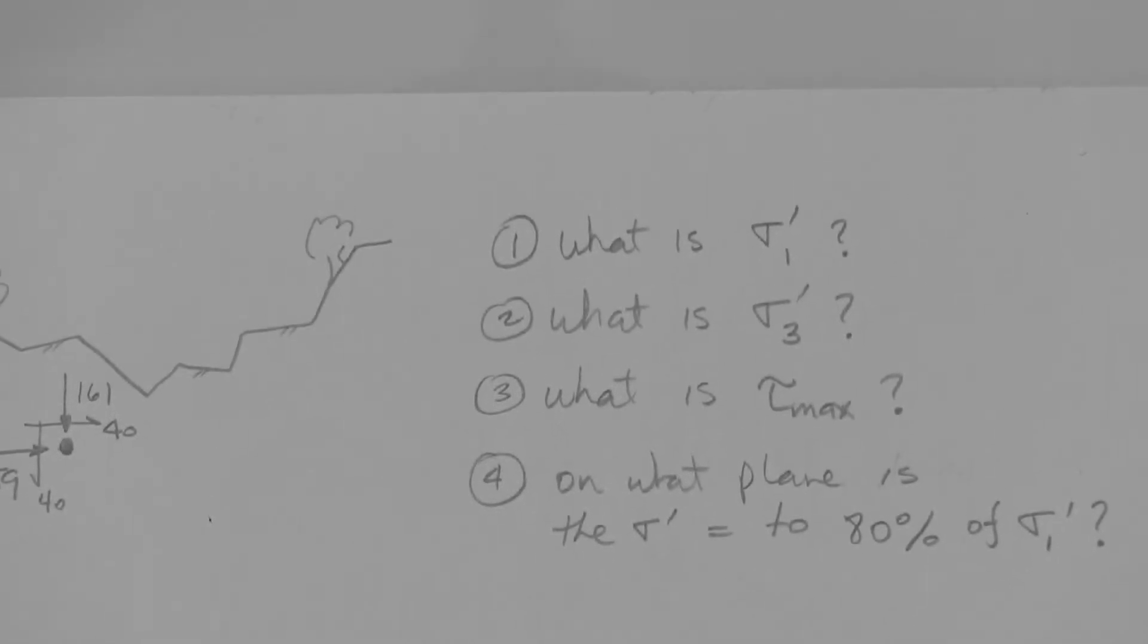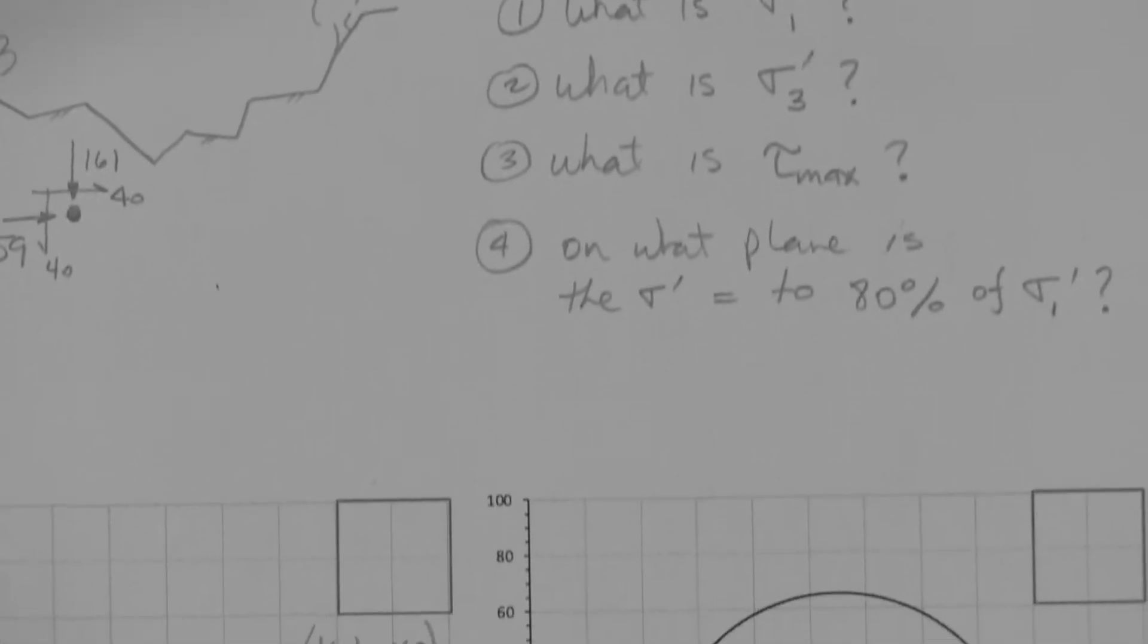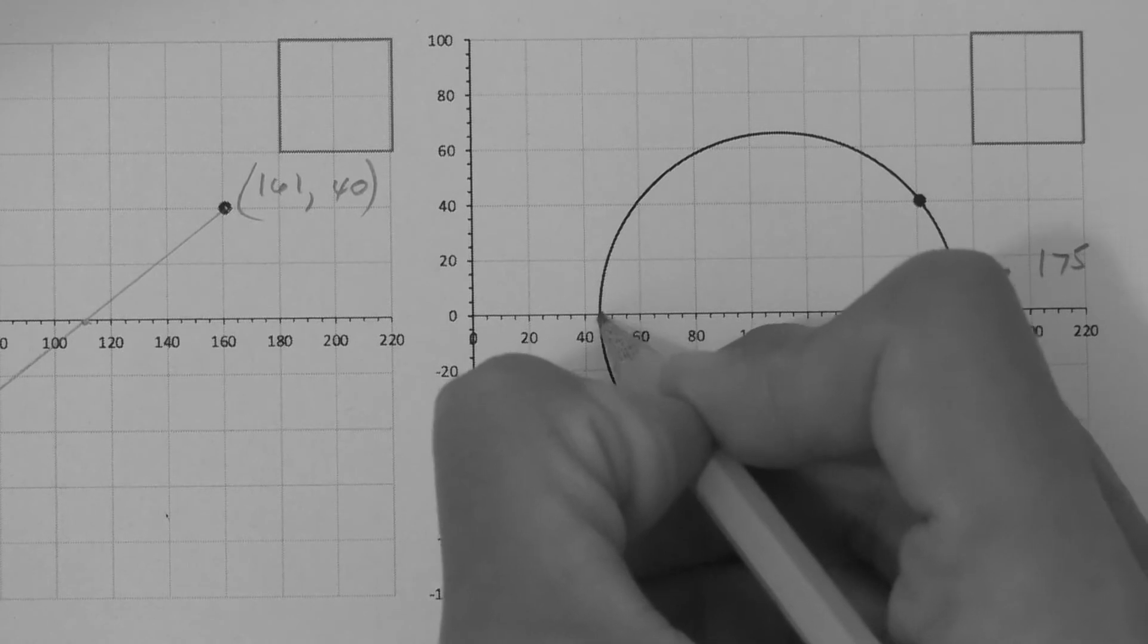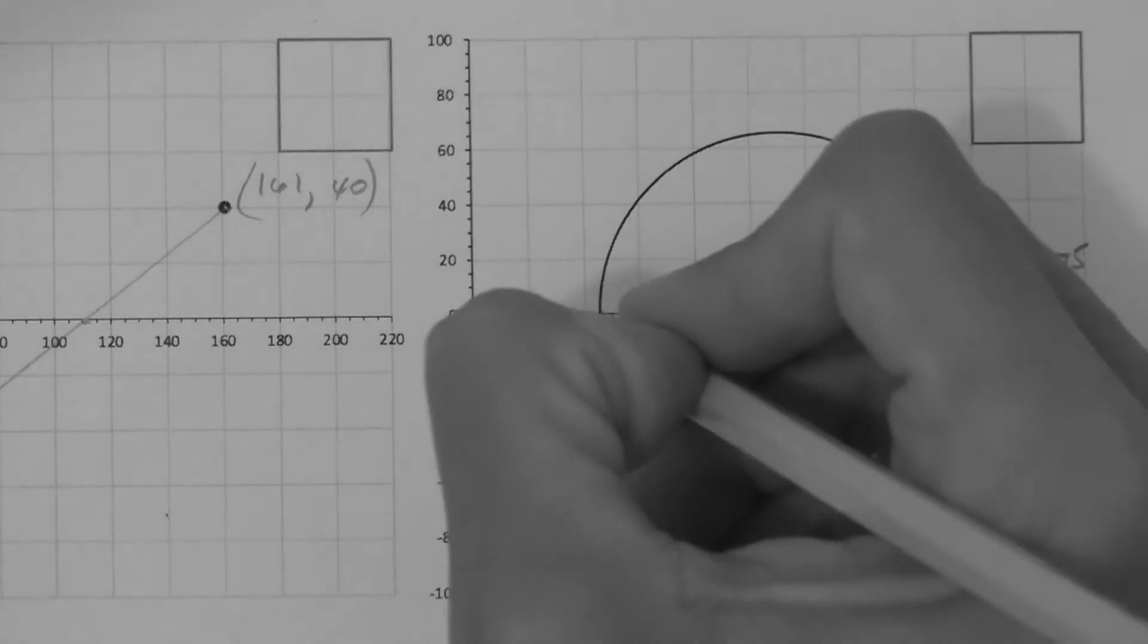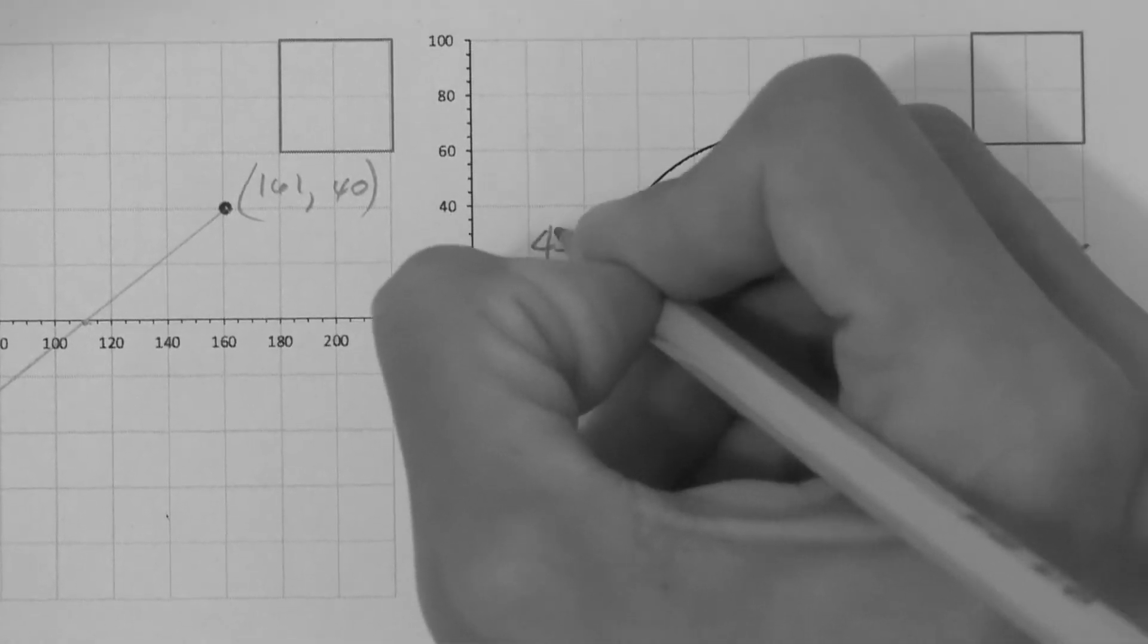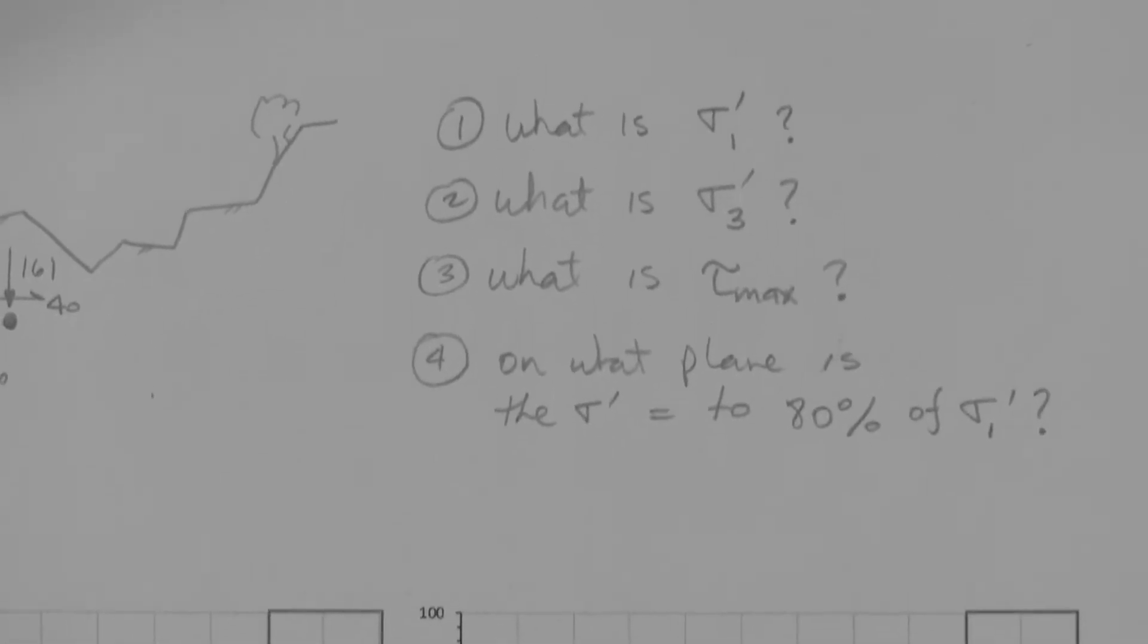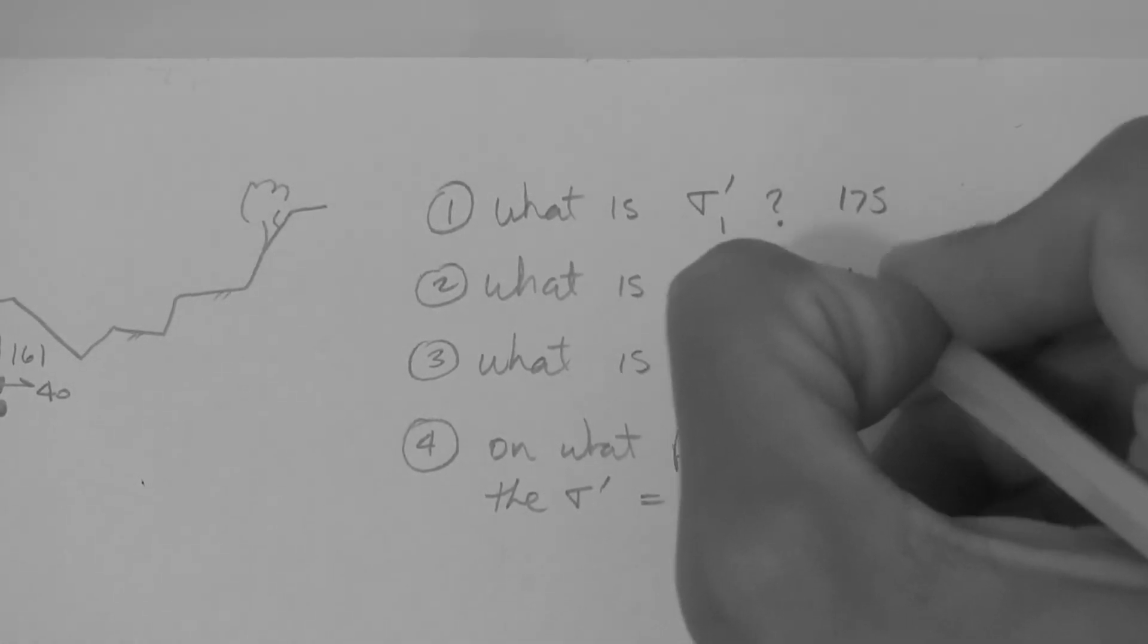Next question. What is the magnitude of the minor principal effective stress, sigma-prime-3? Minor is down here. This is 50, so this is 45 or so kPa. So 175 kPa, 45 kPa.